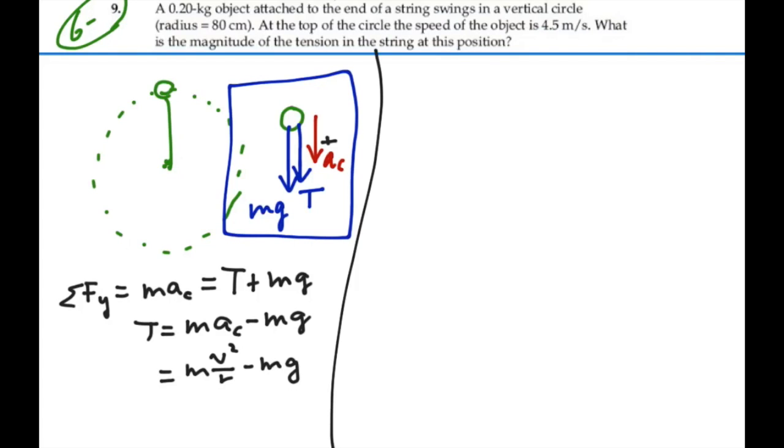We can calculate what this is, because the mass is 0.2 kilograms. The velocity is 4.5 meters per second. And the radius is 80 centimeters, so that would be 0.8 meters. Minus the mass, 0.2 kilograms, times g, 9.8.